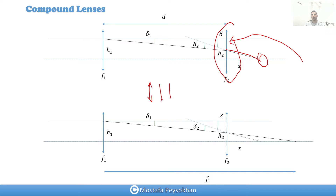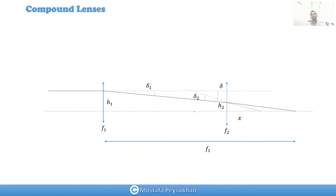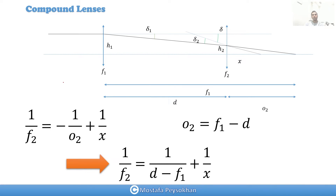For different kinds of lenses, when you have an object, first you image that object through lens one, then through lens two, then lens three — that's the way we look at the whole optical system. You image through lens one, then lens two, then lens three, and then you get to the final image.